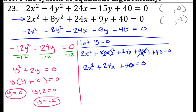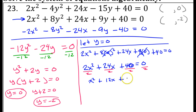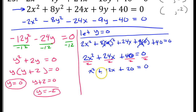The terms with 0 in them go away, leaving 2x squared plus 24x plus 40 equals 0. All of these are divisible by 2, so dividing through gives x squared plus 12x plus 20 equals 0. This is factorable: thinking 2 times 10, making both positive, that works. Setting the factors equal to 0 gives x equals negative 2 and x equals negative 10.